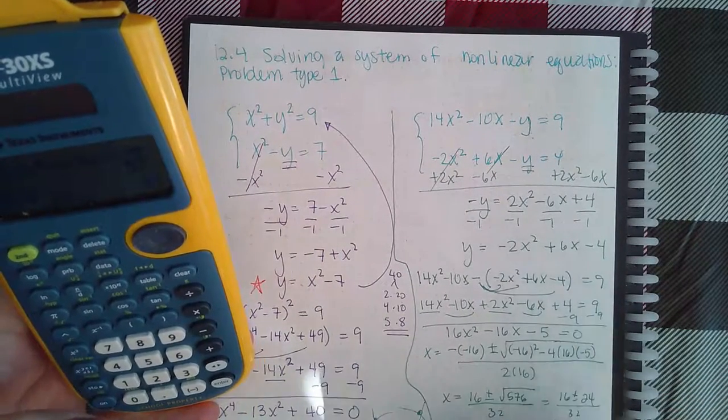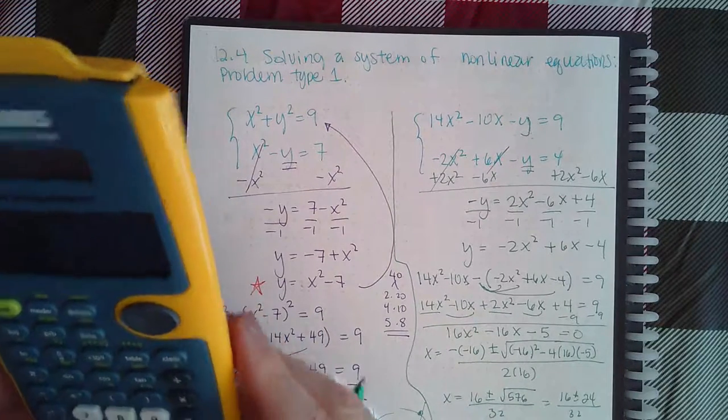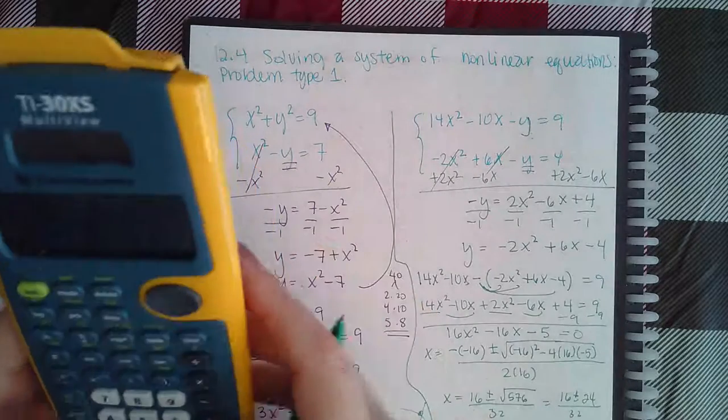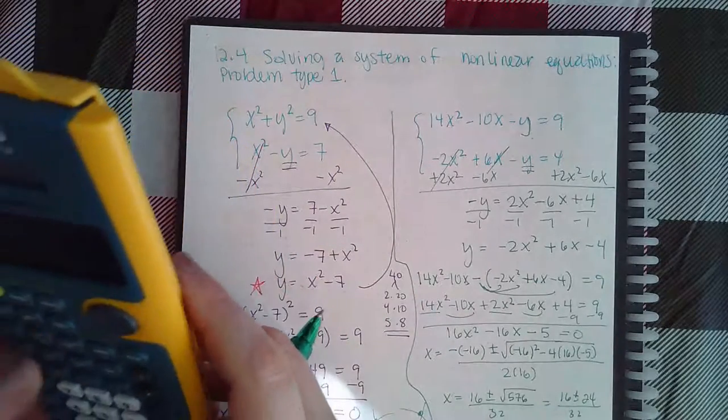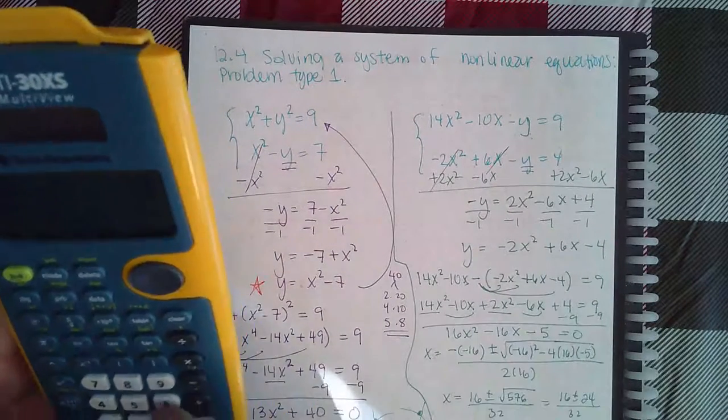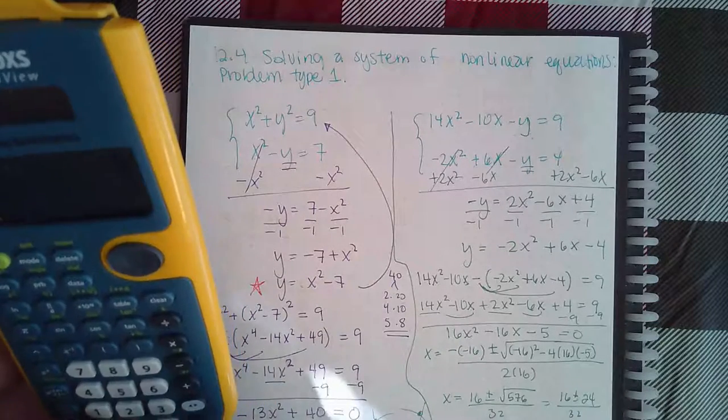I get x equals 16 plus 24 which is 40 over 32 reduces to 5 fourths, and then 16 minus 24 is negative 8 over 32 which reduces to negative 1 fourth.